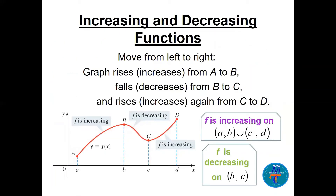Now we look at where a function is increasing or decreasing. From left to right, if the graph rises the function is increasing; if it falls it is decreasing. We write these as open intervals on the x-axis. For example, increasing on (a, b) and (c, d), decreasing on (b, c). We can have two, three, or four such intervals.